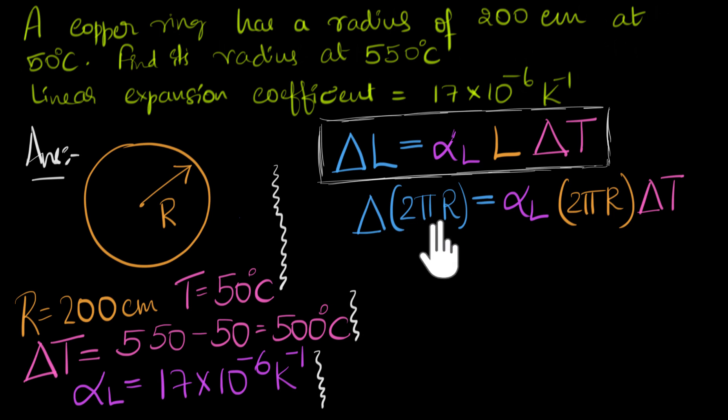But notice that when you're calculating change in 2 pi r, 2 pi is constant. It's not changing. How do you calculate change? You usually do a final value minus initial value, right? So it could be something like 2 pi r 2 minus 2 pi r 1. But notice, 2 pi is common in that. So we could just pull this 2 pi outside the change. We could write this as 2 pi delta r. And now notice, if you compare left and right side, 2 pi is common here and here, we can just go ahead and divide the whole equation by 2 pi, and so this will cancel out. Eventually, what do we end up with? We end up with delta r equals alpha L times r times delta T.